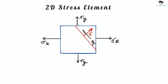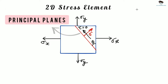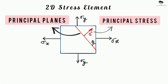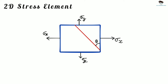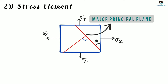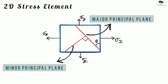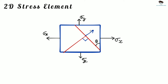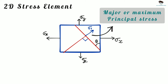The planes on which the shear stress or tangential stress induced is zero are called principal planes. The normal stress acting on a principal plane is called principal stress. We have two principal planes: one is the major principal plane, and the other is the minor principal plane. Therefore, the normal stress acting on the major principal plane is called the major or maximum principal stress.